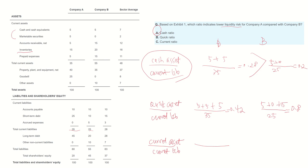For the current ratio, company A's current assets — the sum of cash, marketable securities, accounts receivable, and inventory — divided by current liabilities equals 0.85. For company B, current assets — cash plus marketable securities plus accounts receivable plus inventory — divided by current liabilities equals 1.6. So for the quick ratio, company B is higher, and for the current ratio, company B is also higher.